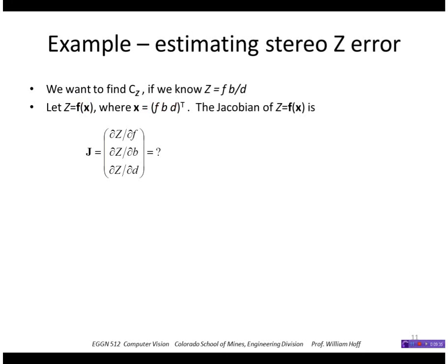Then the Jacobian of that function is the partials of z with respect to these different quantities. The derivative with respect to f would be b over d, with respect to b would be f over d, and with respect to d would be minus fb over d squared. So in this case, we can calculate the Jacobian analytically pretty easily.